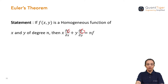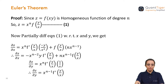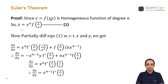Now let us see how we can prove this. We consider z = f(x, y) as the homogeneous function of degree n. Since this function is homogeneous, we can write z = x^n · f(y/x). We will call this Equation 1, because we will use it for differentiating.